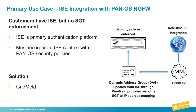SGT is meant to simplify policy creation and enforcement because now policies can be built based on user and device context and no longer based on IP addresses. From an integration perspective, the Palo Alto Networks firewall can consume SGT-to-IP address mapping from ISE through Platform Exchange Grid, or PXGrid for short. The same SGTs created and assigned by ISE can be shared and used as part of a rule set in PAN-OS, shared to the firewall through dynamic address groups, which can be used as either the source or the destination in a policy rule.